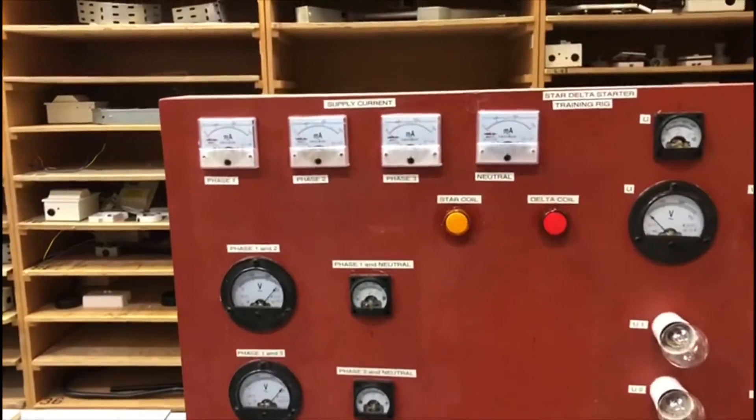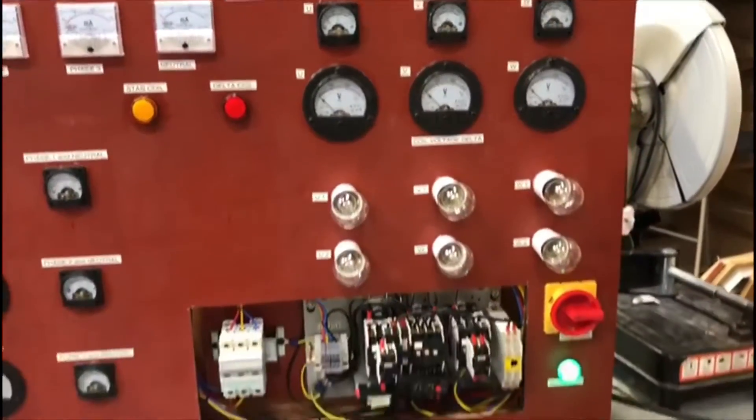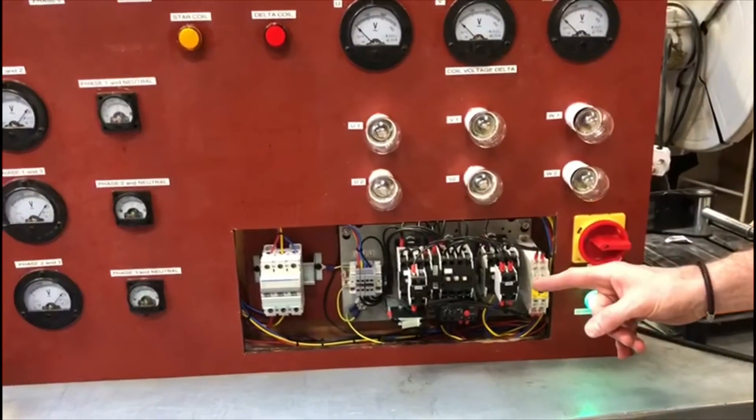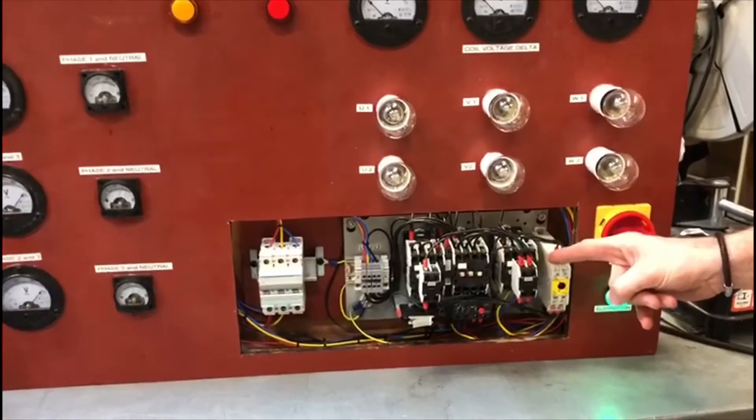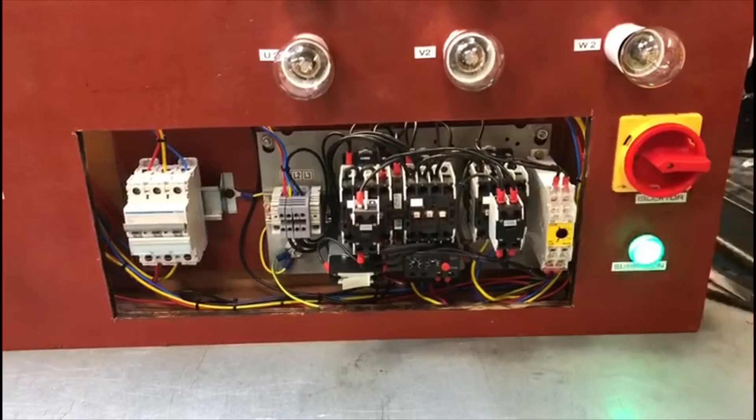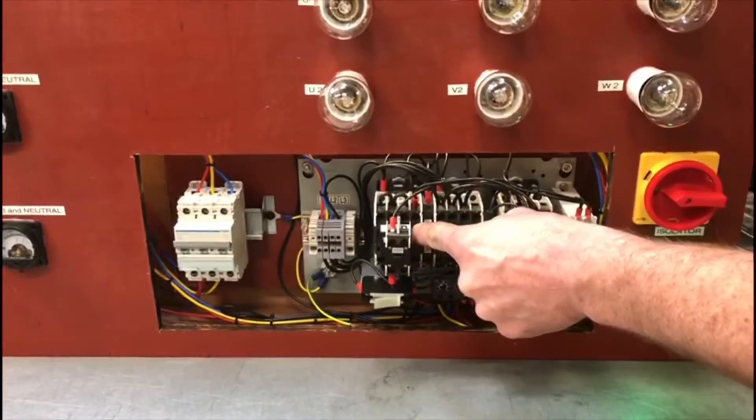We can see that none of the ammeters are working and none of this is working either. So let's just have a quick look at the actual star-delta starter itself. We have the main contactor, okay? So that one always, as soon as you press the on button, the main contactor always pulls in first.